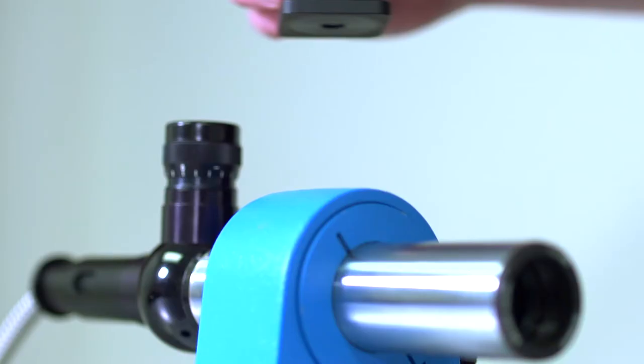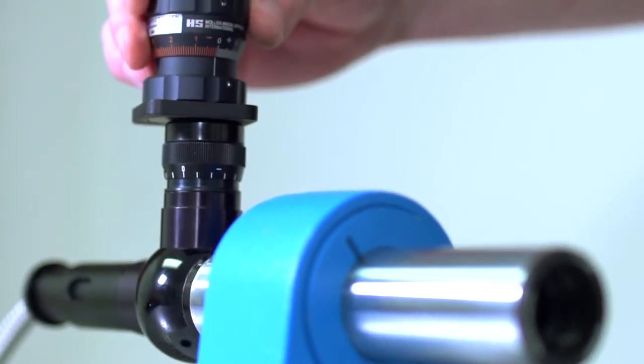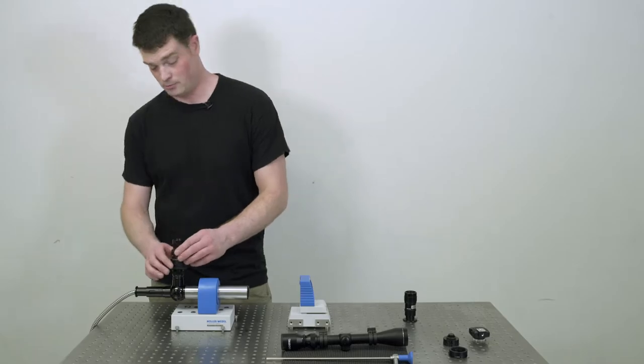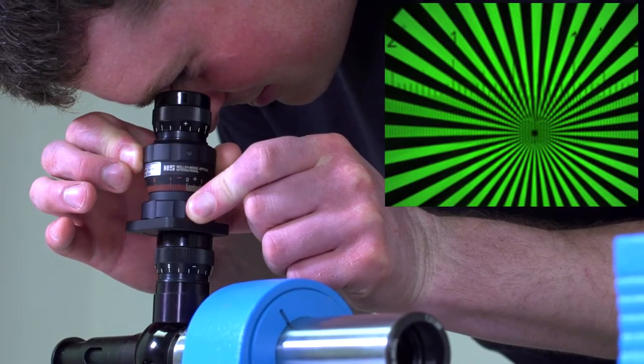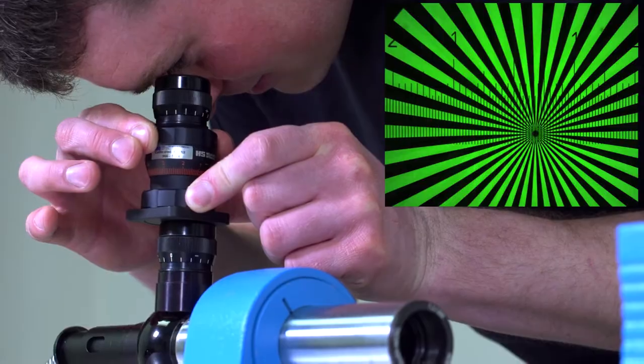Take that and you put it on top of your eyepiece that you're testing. Then you twist this ring to wherever you see best focus through that eyepiece.